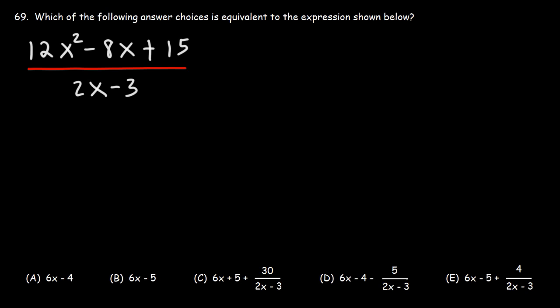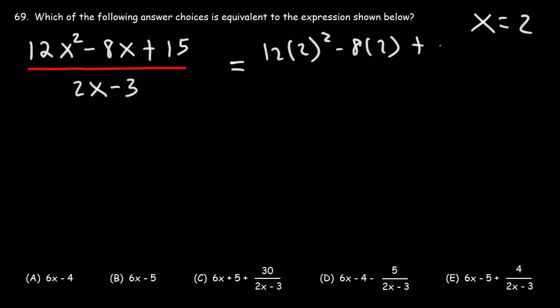There are two ways we can get the answer. We could use long division, or we can plug in numbers. Let's try plugging in numbers. Let's plug in 2 into the expression. So this is going to be 12 times 2 squared minus 8 times 2 plus 15, and on the bottom it's going to be 2 times 2 minus 3.